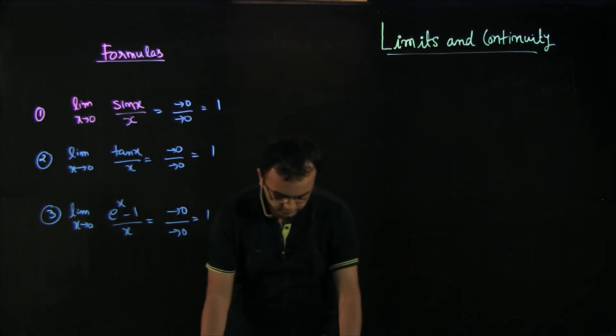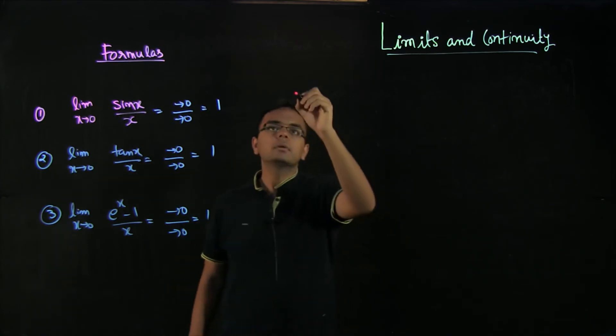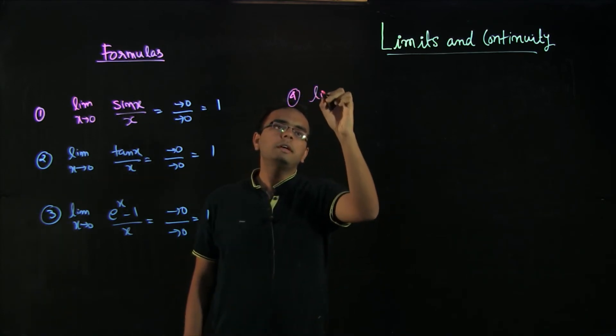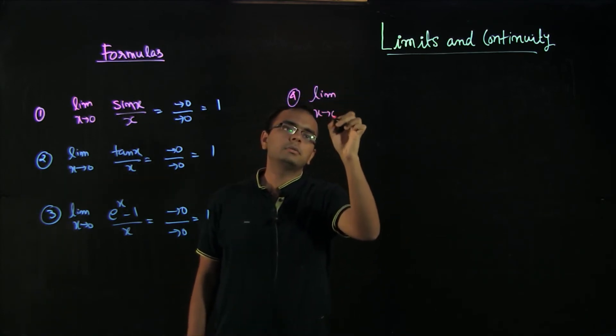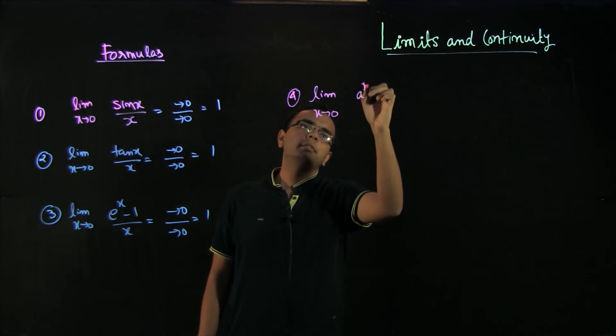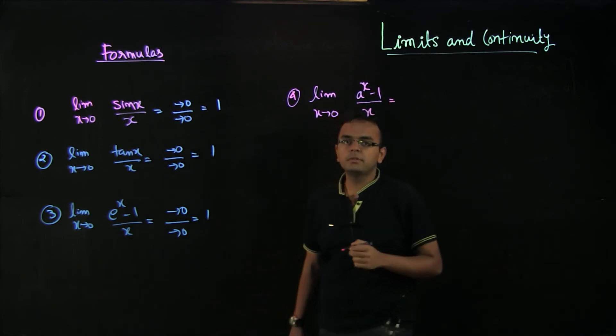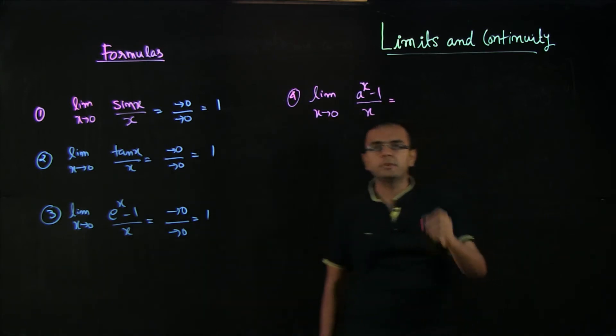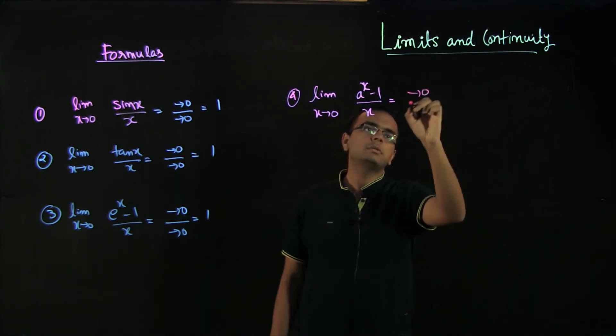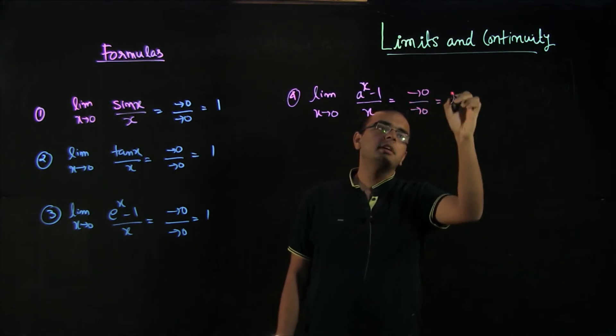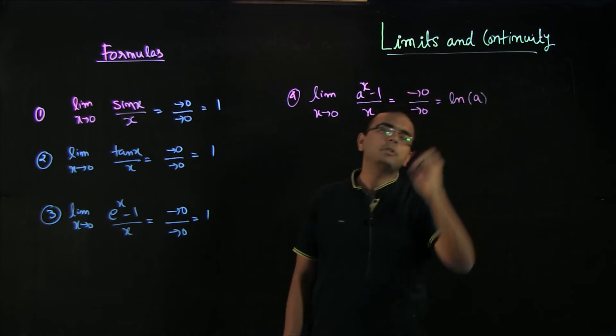Fourth, limit x tends to 0 of a raised to the power of x minus 1 by x. If you substitute x equals 0, it will be 1 minus 1 by 0, again approaching 0 by approaching 0, and this is actually given by log of a, natural log of a.